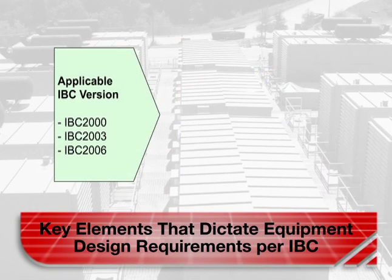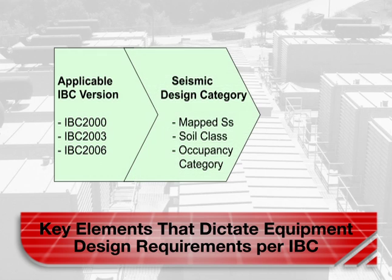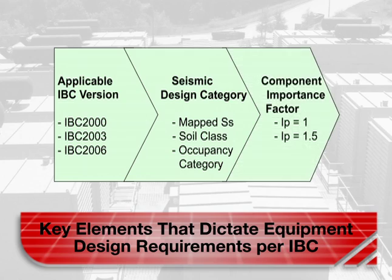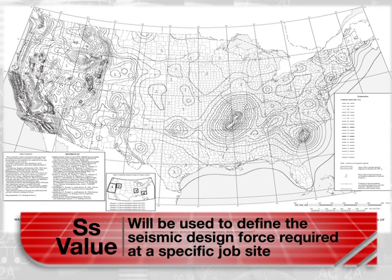The three key elements that dictate applicable IBC design requirements are the version of the code, seismic design category, and the component importance factor, IP. It's worth noting that the old UBC zones from 1 to 4 have been replaced by more exact maps from the U.S. Geographical Survey showing how severe an earthquake can be in a given spot.